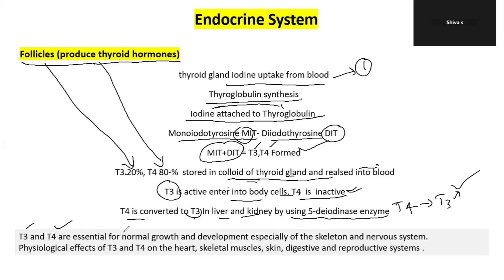T3 and T4 are essential for normal growth and development, especially for the skeletal system and nervous system. T3 and T4 are also important in terms of metabolism regulation in the body.